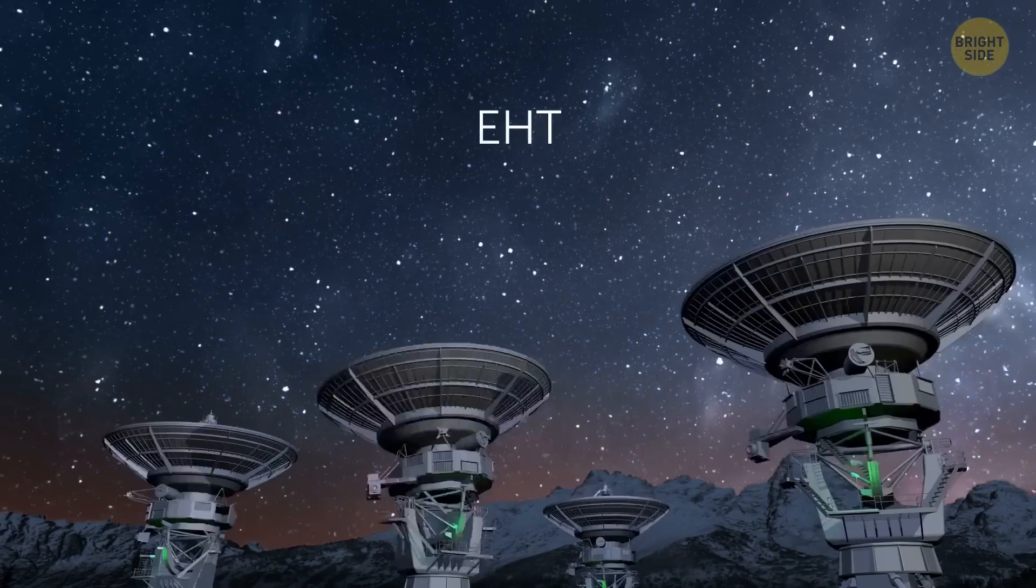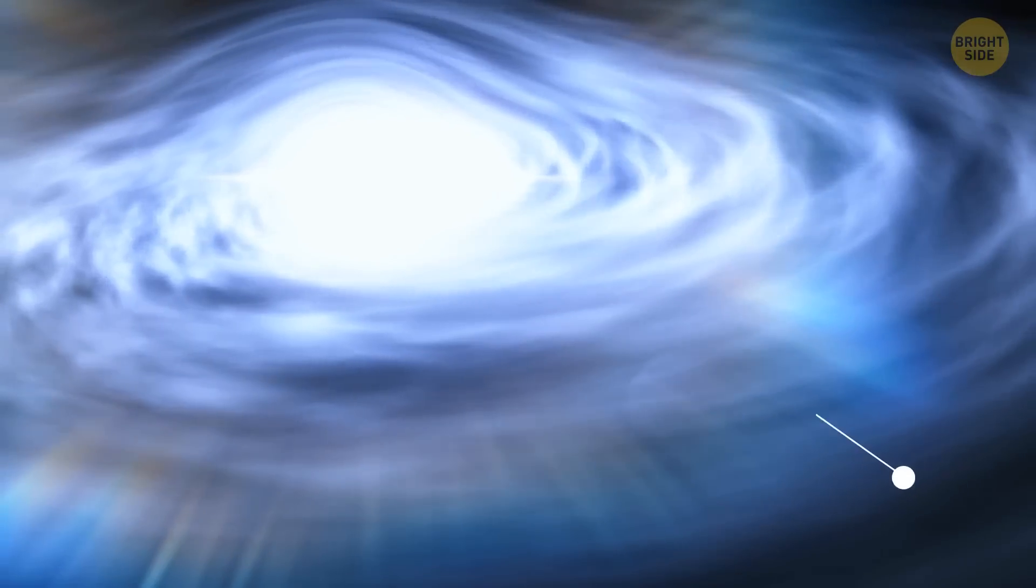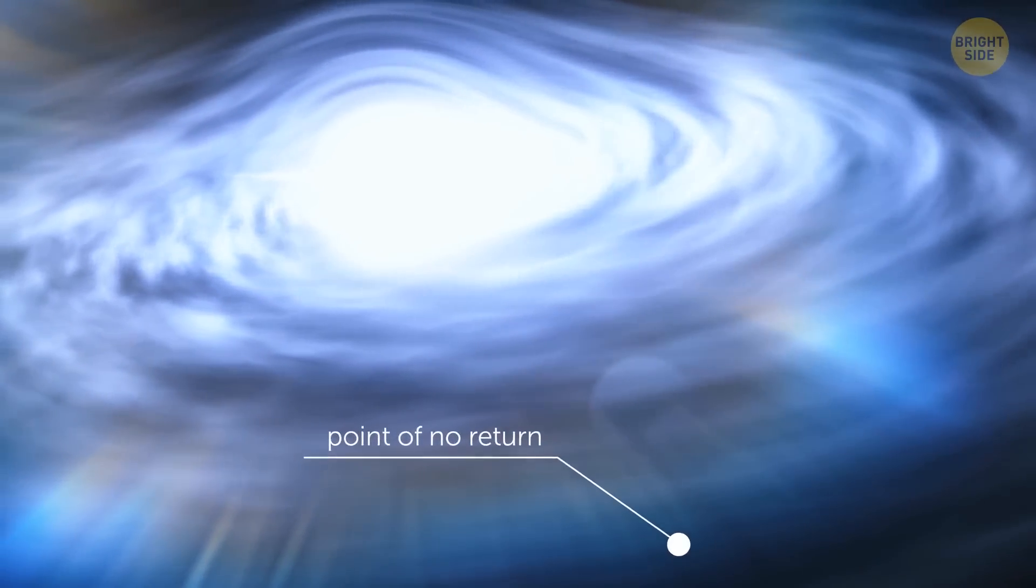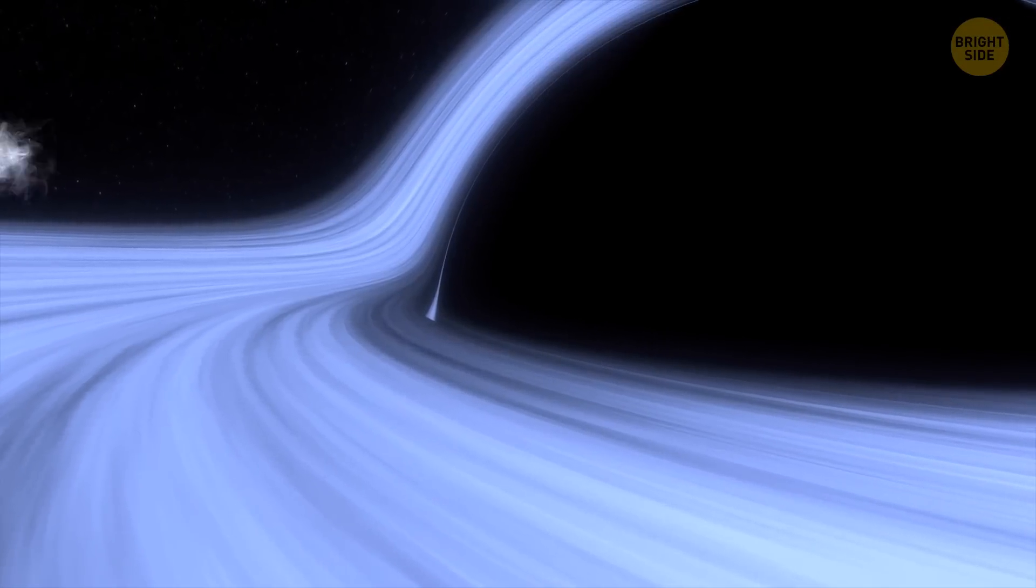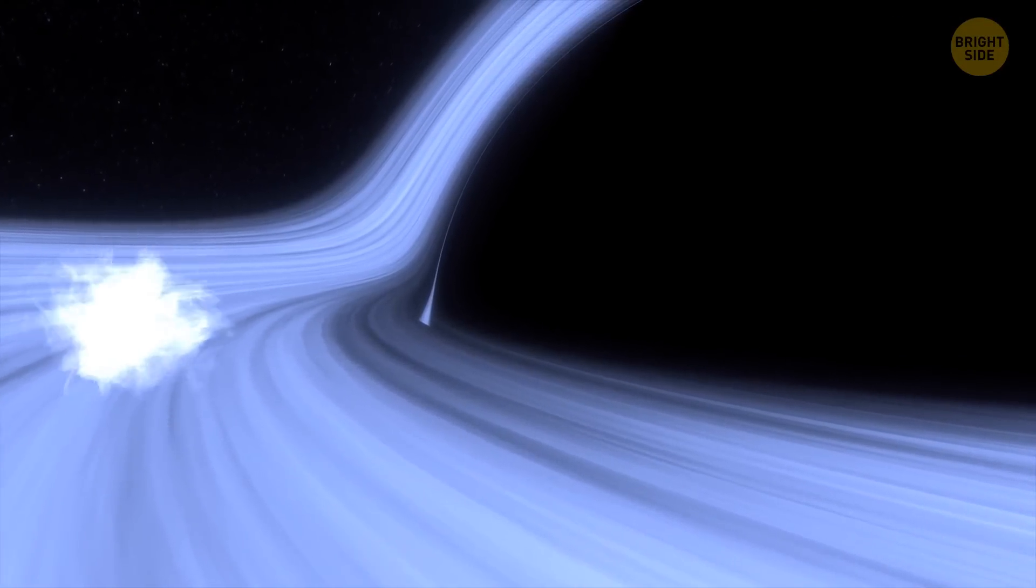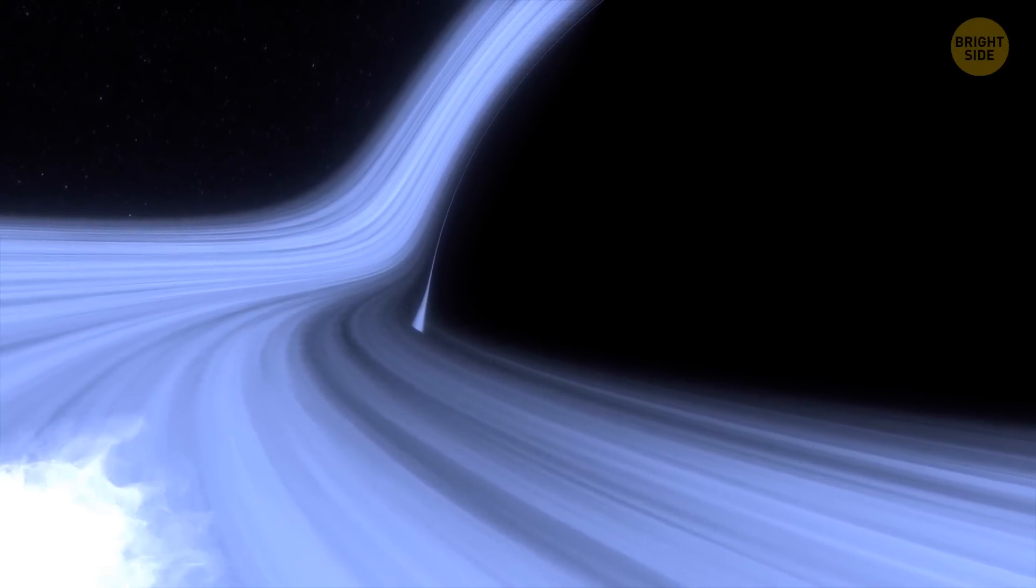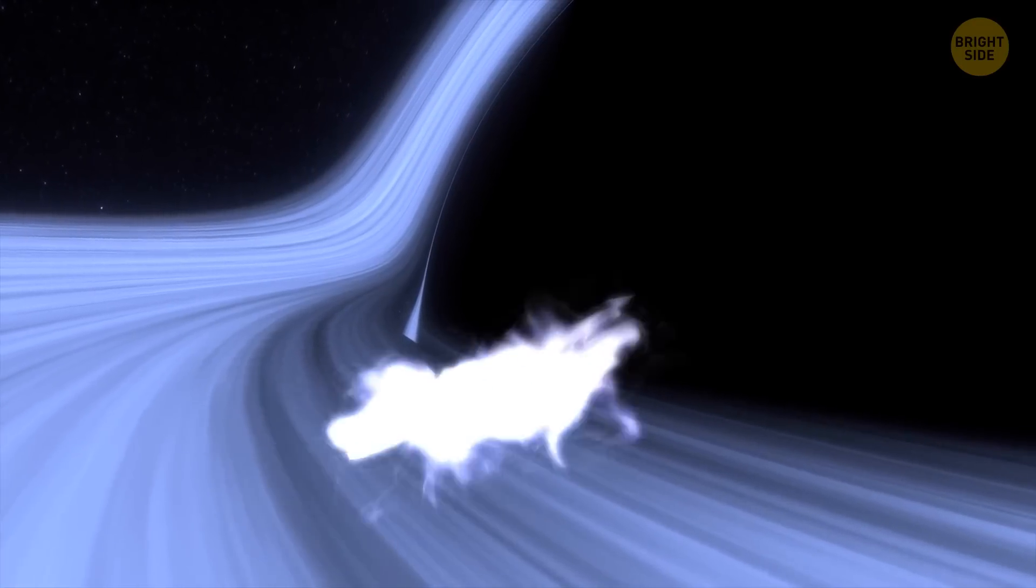Why such a name? The thing is that the event horizon is a point of no return on the outskirts of a black hole. When something, for example, matter, radiation, or light, reaches this boundary, there is no way for it to escape the black hole's clutches.